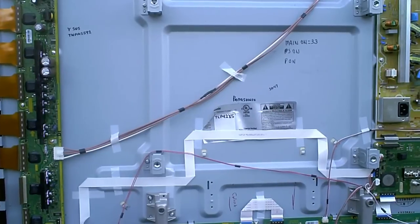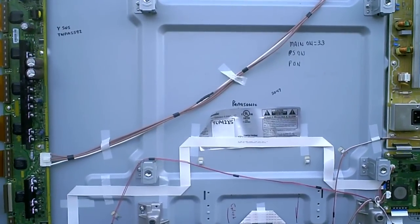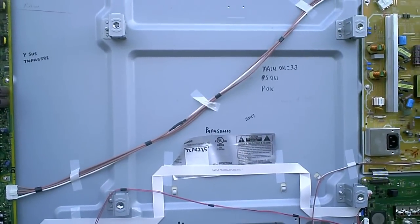So I went ahead and replaced the white sustain board, and when I was done doing so, I noticed there were some horizontal lines going across the screen.